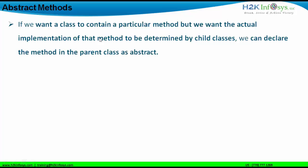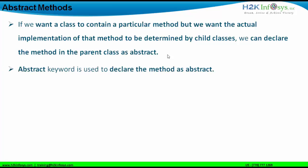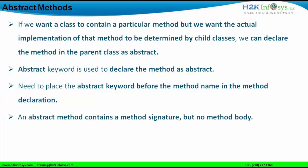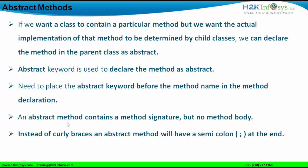We declare the method in the parent class as abstract. Abstract is the keyword to be used with methods declared as abstract, and you need to place the abstract keyword before the method name in the method declaration. An abstract method contains a method signature but no method body. Concrete methods have a body within curly braces, but an abstract method will terminate with a semicolon instead of curly braces.